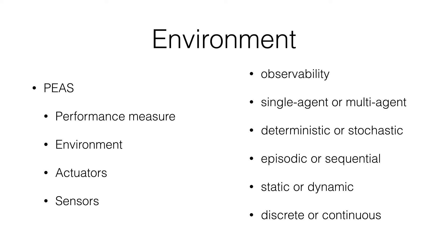Environments also have a few attributes useful to think about. First is observability — how much information in the environment is available to the agent. Second is how many AIs will be operating in the environment: will it be a single agent or multiple agents, and will they be cooperating or competing? Third is whether the environment is deterministic or stochastic — whether there is any randomness or chance involved in what happens when an agent takes actions. Fourth, environments can be episodic or sequential, meaning whether past actions and decisions will affect future environments. Most environments are actually sequential, but some reset periodically, making them more episodic.